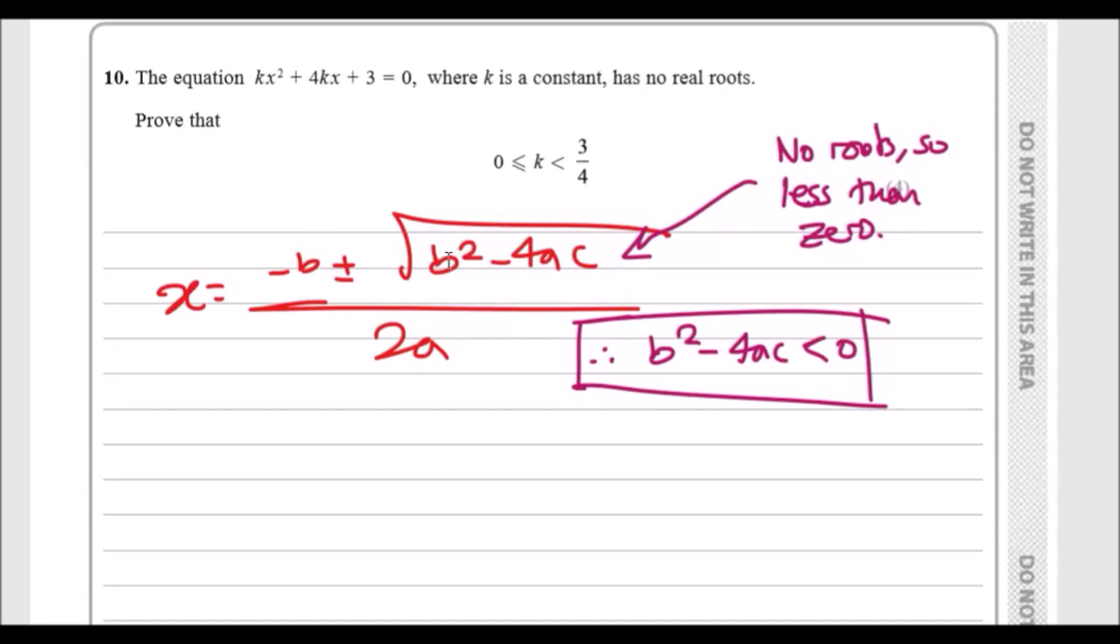So in other words, b squared minus 4ac inside the square root must be negative or less than zero. This is the equation we begin with. Now prove that we can get this equation - all we do is replace the b squared minus 4ac with the letters from here.